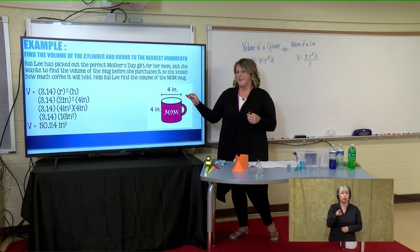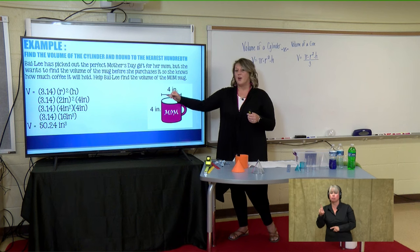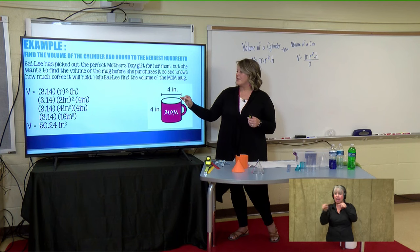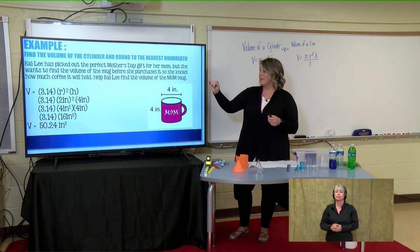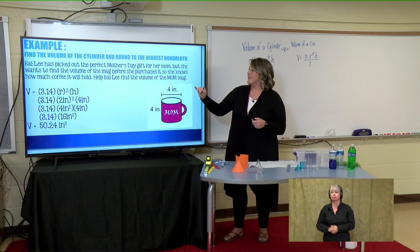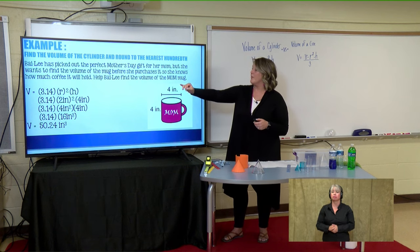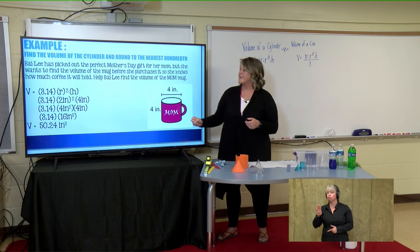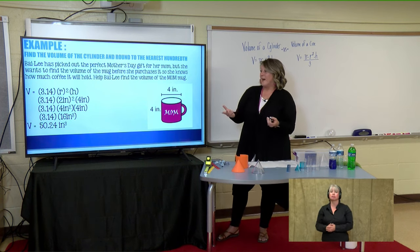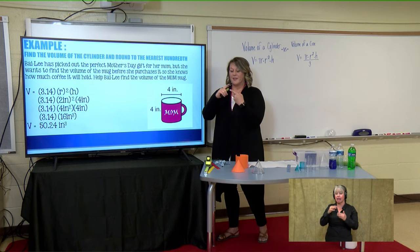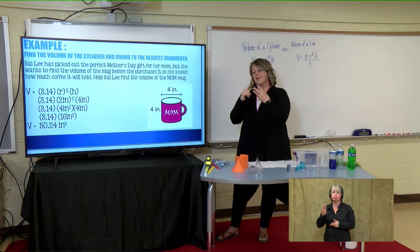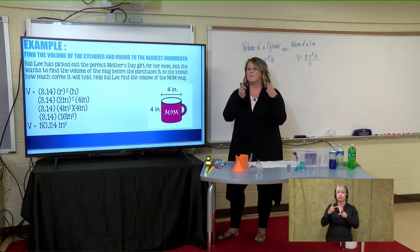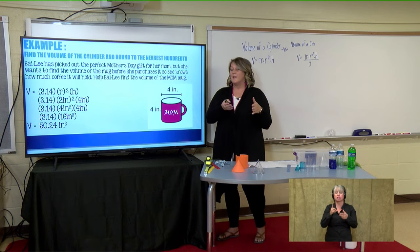Help Bailey find the volume of the mom mug. The mug shows four inches all the way across — so is that the diameter or the radius? That's right, it's the diameter. All the way across is the diameter; halfway across is the radius. So we'll need to convert that. The height of the mug is also four inches, and pi is 3.14. Those are the three things we need: pi, radius, and height. We have a diameter, so to find the radius we divide by two.